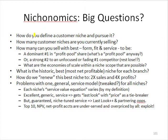First of all, how do you define a customer niche and pursue it? How many customer niches are you currently selling? A typical distributor has been product volume-centric, with more salespeople covering more territory. They could be selling anywhere from a low of 10 to as many as 30 different theoretical niches, when the truth is all their money comes from maybe two, and the rest need some overhauling.